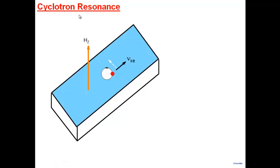The next experiment allows measurement of effective mass. We have an n-type sample, no electric field applied, just a magnetic field. Normally carriers move around and get scattered. Applying a high magnetic field: the Lorentz force — always perpendicular to the carrier's motion — tries to force the carrier to move in a circle. But scattering interrupts the circular path unless the magnetic field is large enough.